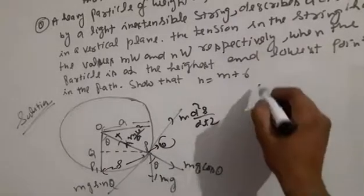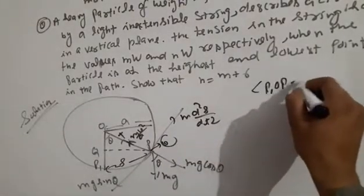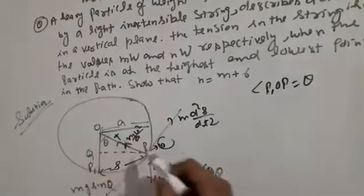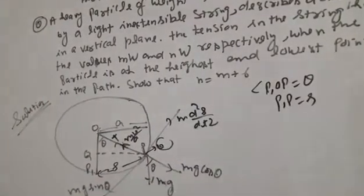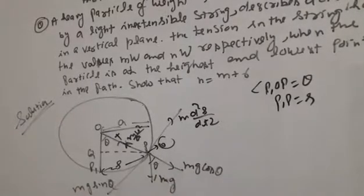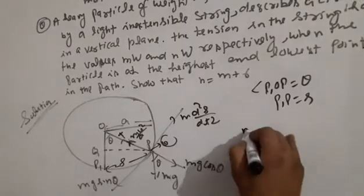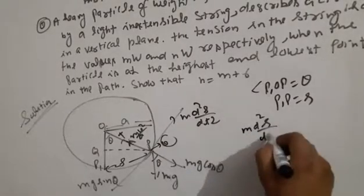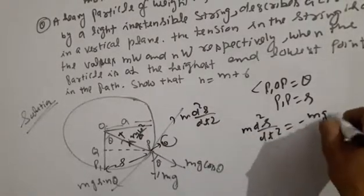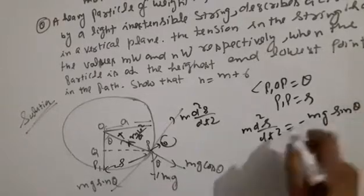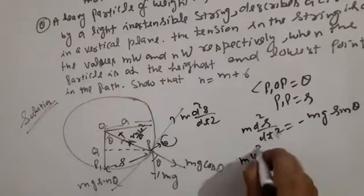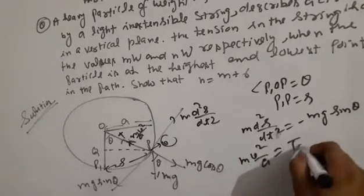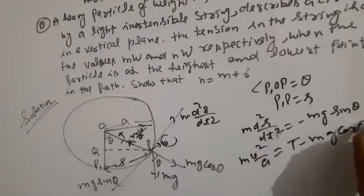The angle P1-O-P is equal to theta. The arc P1-P is S. Setting up the equations of motion: M times d²S upon dT² equals the tangential component.